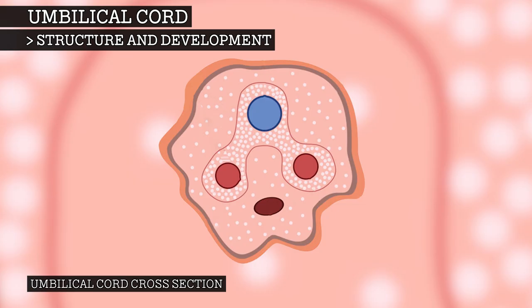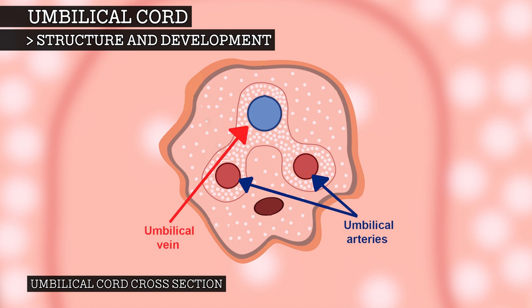The umbilical cord normally contains two umbilical arteries, a single umbilical vein, an obliterated allantois duct, all surrounded by Wharton's jelly, a gelatinous substance that protects the blood vessels inside.